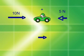What is the net force acting on this car? Because the forces are acting in opposite directions, we need to subtract them. The result of the subtraction is 5 newtons. The stronger force is going to the right, so the net force also goes to the right. This car would move to the right.